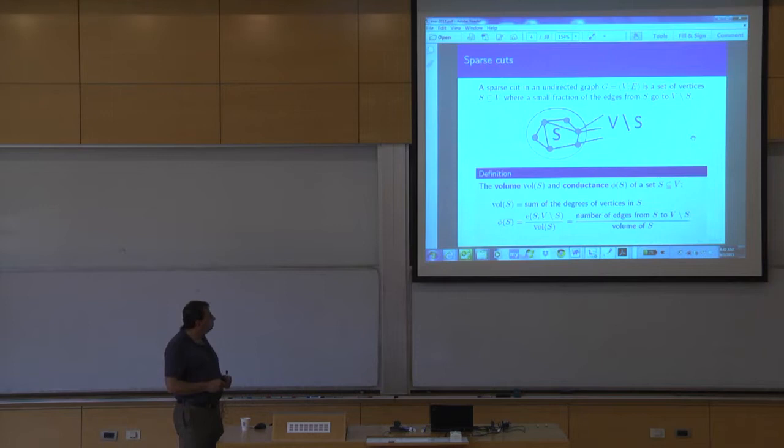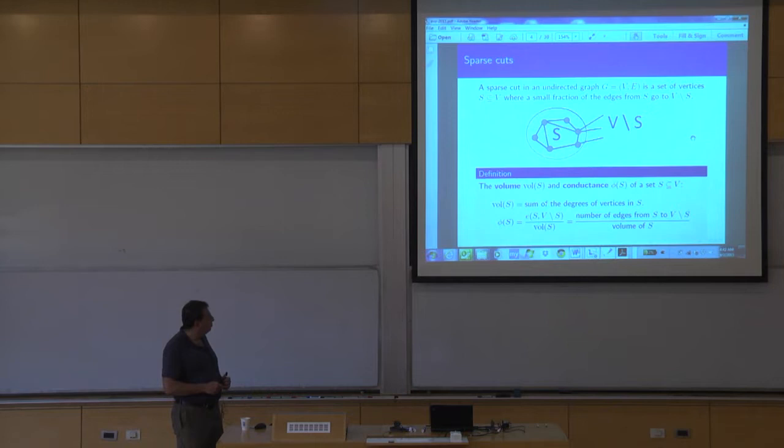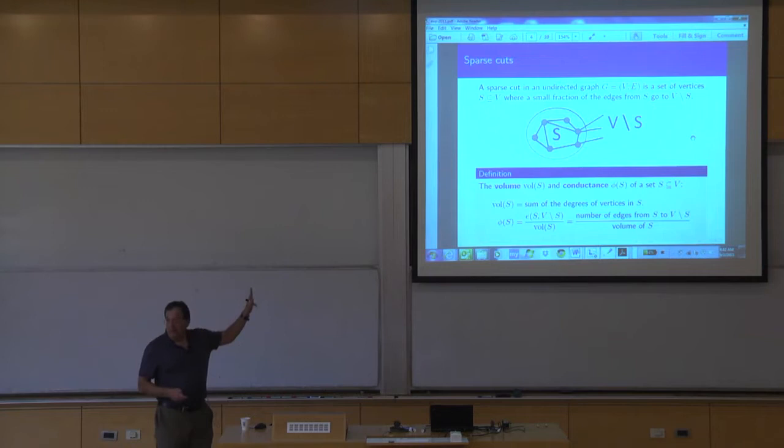How do we measure our success? Given any set, the volume is just the total stationary distribution of the set — the sum of the degrees if we're doing simple random walk on a graph. The conductance — this is not electrical conductance — is the number of edges from S to its complement normalized by the volume. The goal is to find sets S of maybe a prescribed size with a small boundary-to-volume ratio.